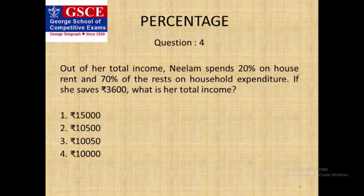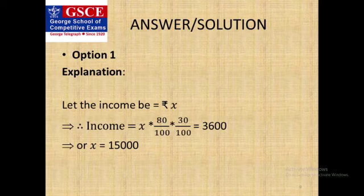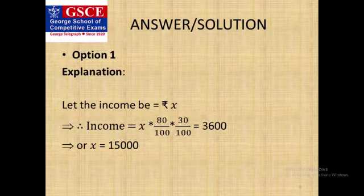Now question 4: Out of a total income, Neelam spends 20 percent on house rent, 70 percent of the rest on household expenditure. If she saves rupees 3600, what is her total income? First 20 percent is spent, then 70 percent of the remaining is spent, and finally she saves 3600. So what is her total income?